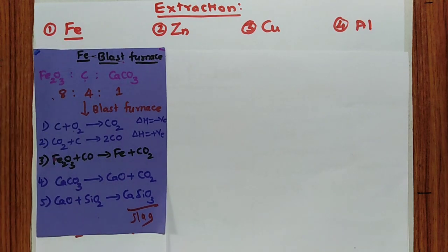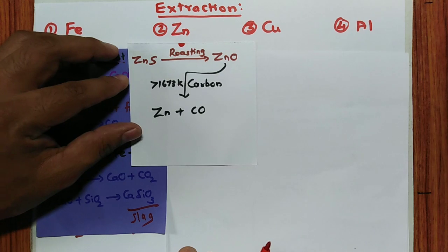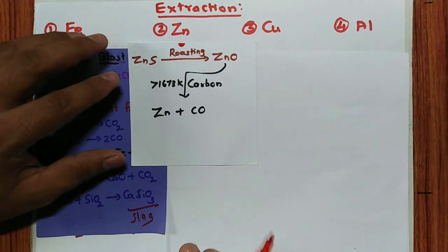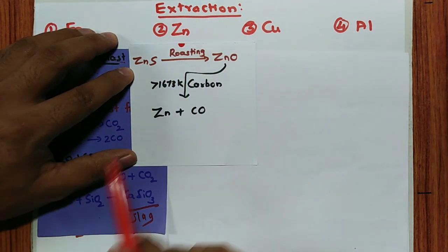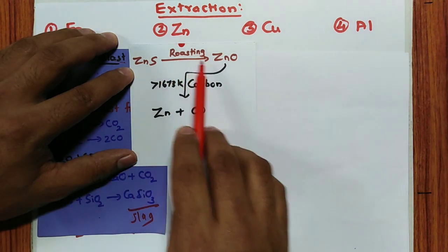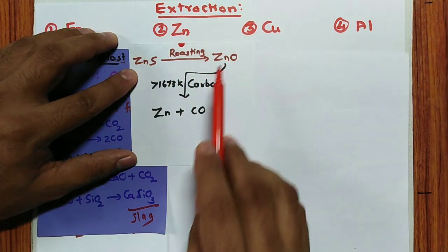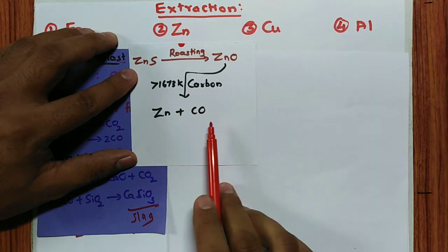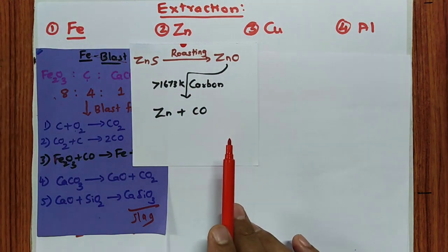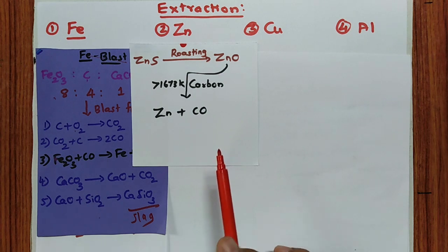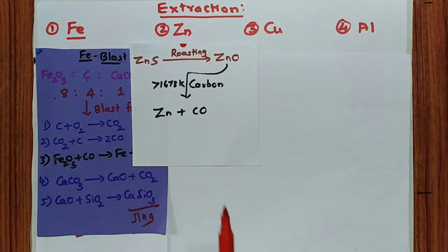Extraction of zinc: ZnS undergoes froth flotation first, then roasting to give ZnO. ZnO is then reduced by carbon to form zinc and CO. According to the Ellingham diagram, the temperature should be 1673 K and above.